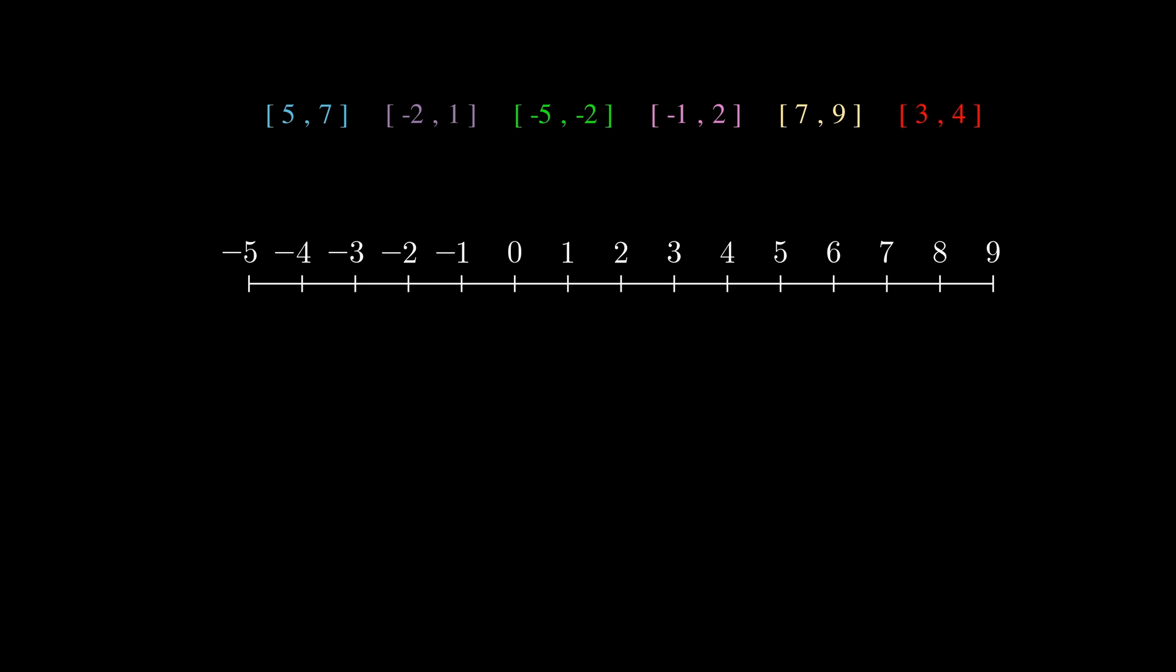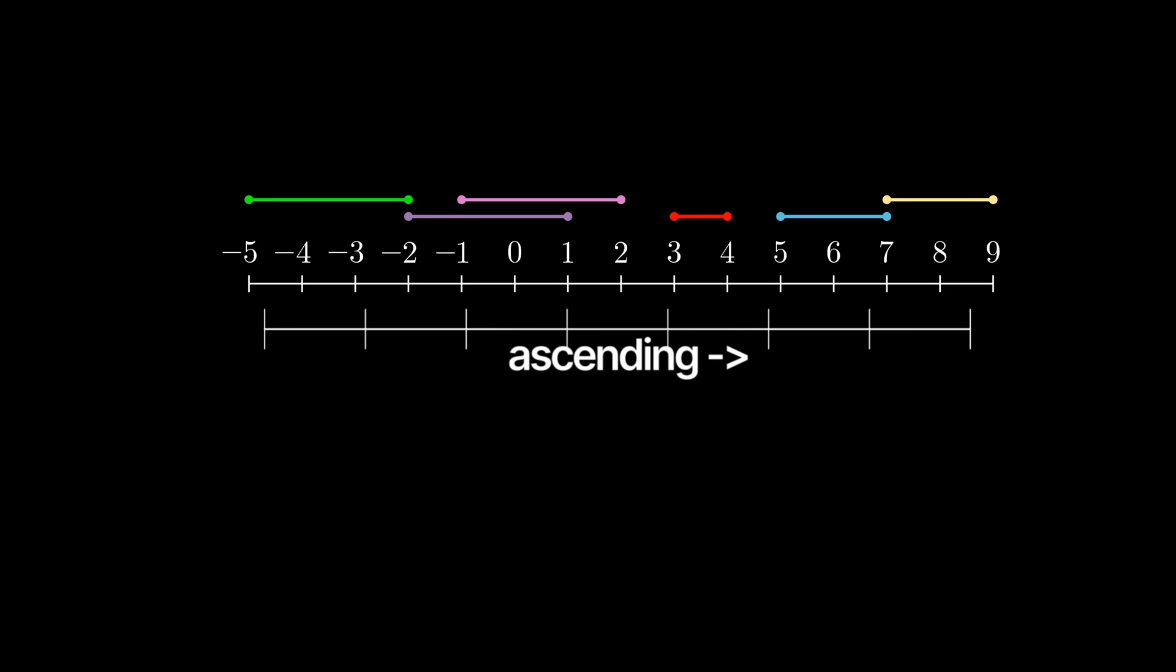So if we imagine that we're given a list of intervals like this, the easiest way to see which are overlapping is to put them on a number line. But how does doing this translate into code? Well, if you notice, the original list of intervals that we got is unsorted, right? But when we move them onto the number line, the intervals will naturally sort themselves by the start of each interval. The start being the left value in the interval. That's because the number line is inherently sorted in ascending order. So in order for the intervals to occupy a space on the number line, they have to conform to the order of the number line, which is in ascending order.